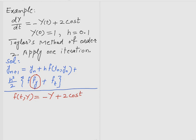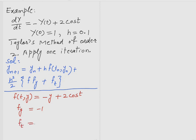Now we compute the derivative of f with respect to y, and then with respect to t. Since we apply the numerical method, the right-hand side uses small y. The derivative with respect to t gives us -y' - 2sin(t).